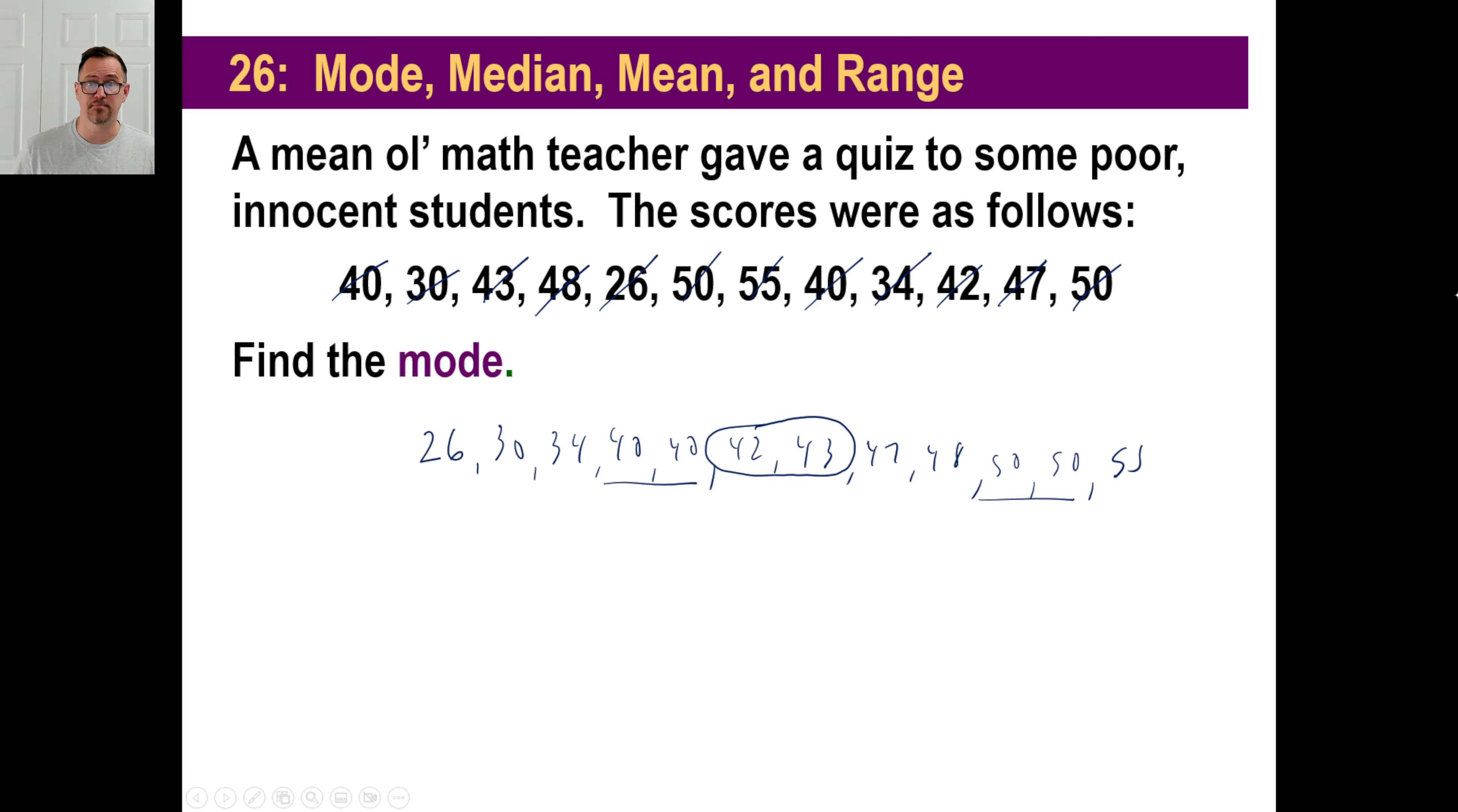So what you're going to have to do to find the median, the median number is the one right in the middle. Well, right in the middle of 42 and 43, we would say the answer is 42.5. That's your median.